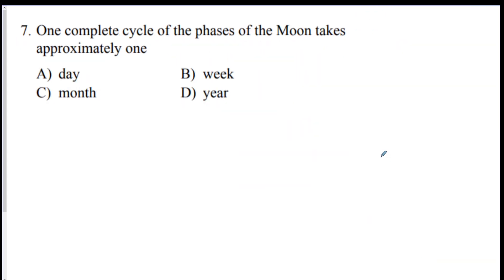Number seven. One complete cycle of phases takes approximately one what? I like to remember the phases as about one moonth. Get it? A moonth? Because the phase of the Moon takes about a month to go from a new moon to a new moon, or a full moon to a full moon, or a waning crescent to another waning crescent. It's about a month.